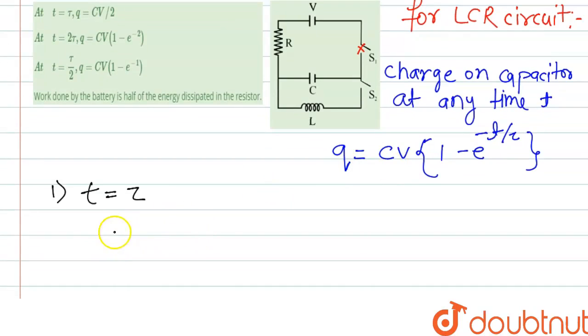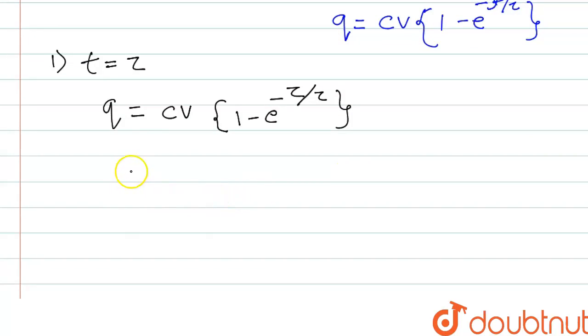we can write this equation again. Q equal to CV 1 minus e to the power minus T, and in the place of T we can write tau divided by tau. So this equation will become CV 1 minus e to the power minus 1.